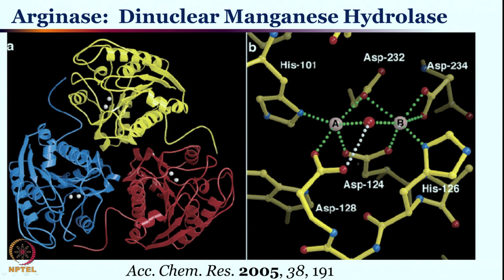One such fascinating enzyme is arginase — a dinuclear manganese enzyme, not a zinc enzyme. Two metal centers can be identified: site A and site B. They are bridged by a carboxylate and also by aspartate. Each metal center has at least one histidine — one histidine at each site — so each is connected with one histidine.